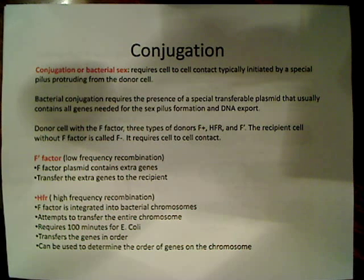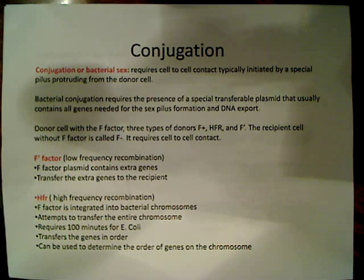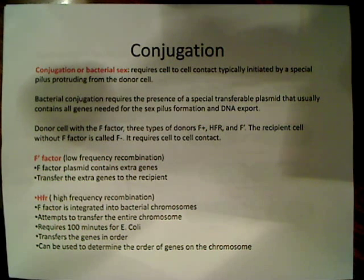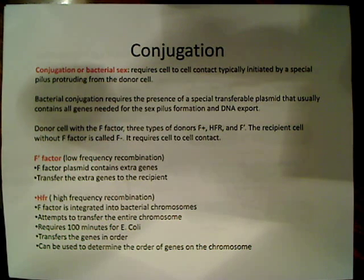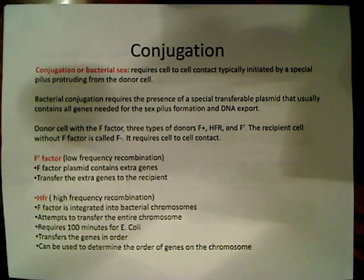The HFR cell is called high-frequency recombination. With high-frequency recombination, the F-factor plasmid is actually integrated — the F-factor is integrated into the bacterial chromosome, so it's no longer separate. In the case of HFR cells, the F-factor genes that are normally located on the plasmid are actually located in the bacterial chromosome.